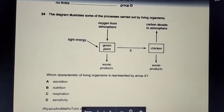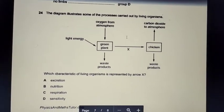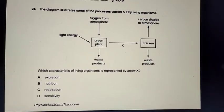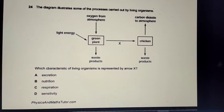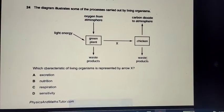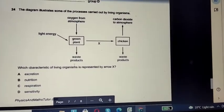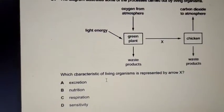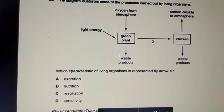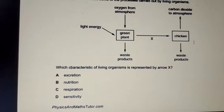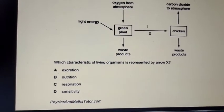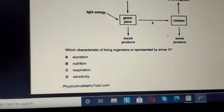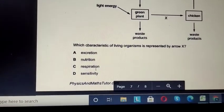Question 24: a diagram shows a green plant taking in light and releasing oxygen to the atmosphere via photosynthesis. X is given to a chicken. Carbon dioxide and waste products go to the ground. What is X? The chicken is eating the green plant — the plant stores energy and nutrients via photosynthesis, and the chicken transfers that energy to its own body by feeding. So X is nutrition. The answer is B.